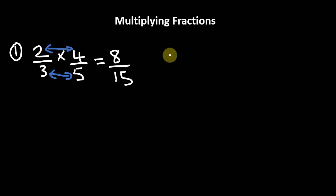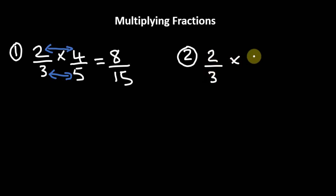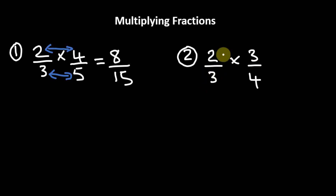In some cases you can actually reduce before you multiply, or you can carry out the normal multiplication of fractions and then simplify your answer at the end. Let me demonstrate what I'm talking about. What if we had 2/3 times 3/4? We could actually simplify first before we multiply.